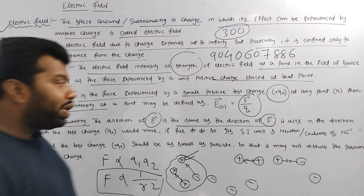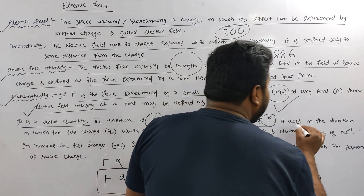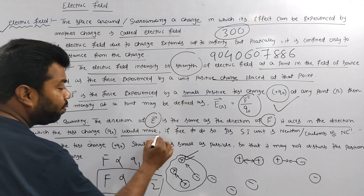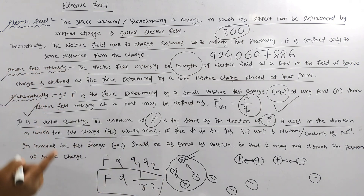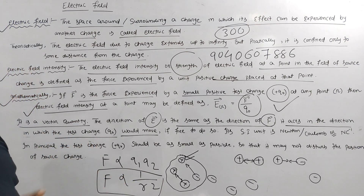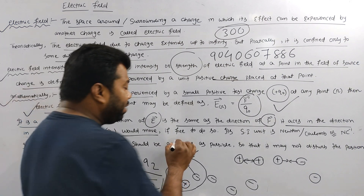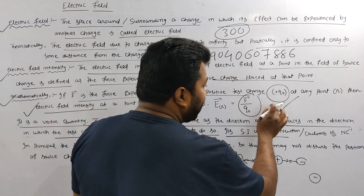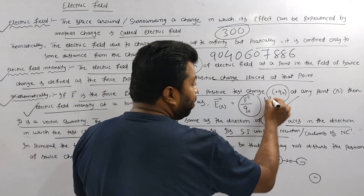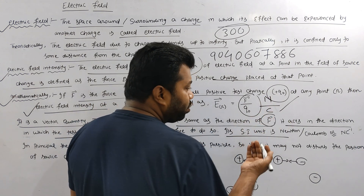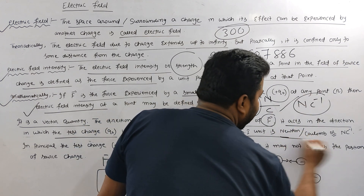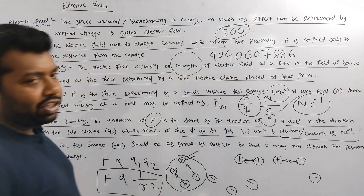Select the vector quantity. Now, ask how the direction of the field works. It is a function in the direction in which the test charge Q₀ moves — which direction will the test charge move? If you have to find the correct direction Q₀, you need to move in the direction of the test charge. Its SI unit: if it is a force unit, the force unit is N/C inverse — Newton per Coulomb. That is the electrical intensity unit.